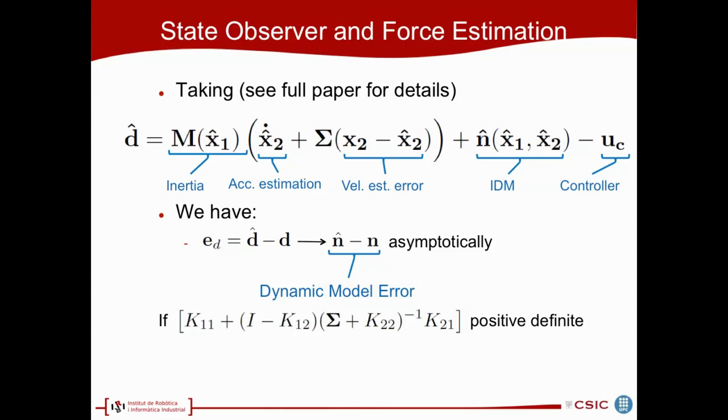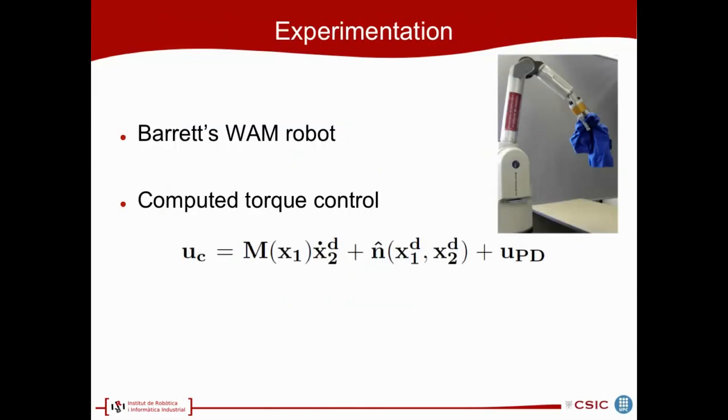We finally got our force estimation, and to test its behavior, we used a Barrett-Whole-Arm manipulator, which is a 7-degree-of-freedom redundant arm, and we used the Computed Torque Control controller, which is a compliant controller, in the sense that it is not very stiff, and uses the dynamic model and the inertia and acceleration together with a small PD controller in order to compensate errors.